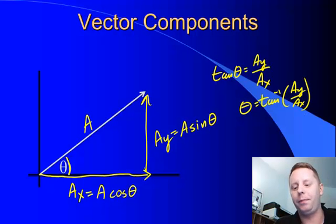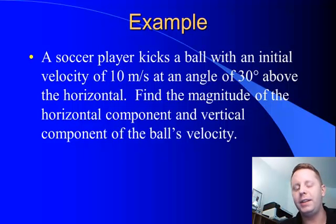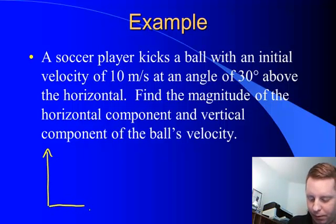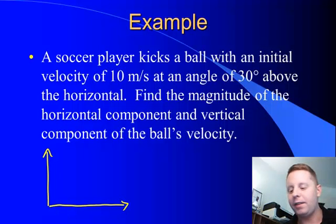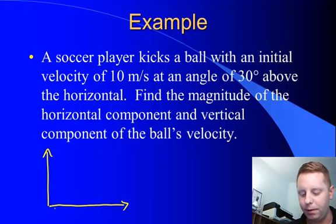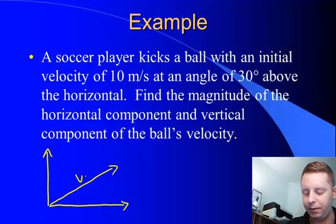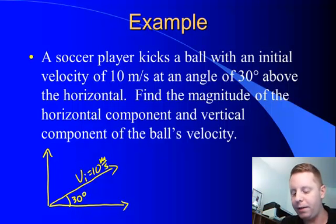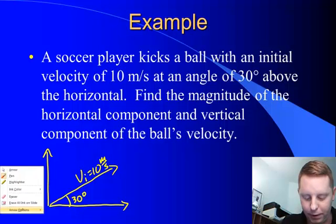Let's take a look at an example. If a soccer player kicks a ball with an initial velocity of 10 meters per second at an angle of 30 degrees above the horizontal, find the horizontal and vertical components of the ball's velocity. Well, let's draw our axes here first. There's our y axis and our x axis. And the soccer player kicks the ball with an initial velocity, so there's our initial velocity vector. We'll call that vi for initial velocity. Which has a magnitude of 10 meters per second. And it's at an angle of 30 degrees above the horizontal. We want to find its horizontal and vertical components.